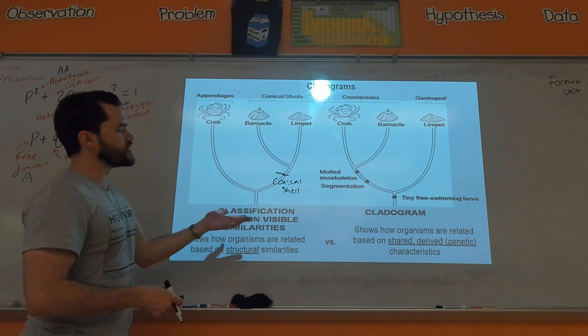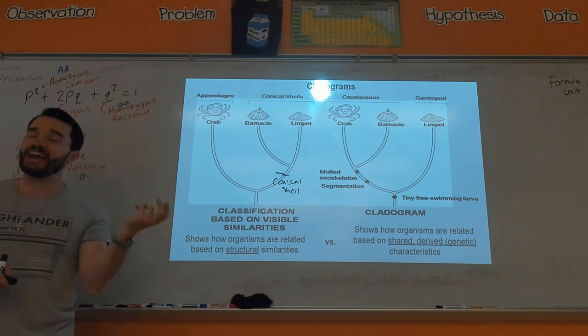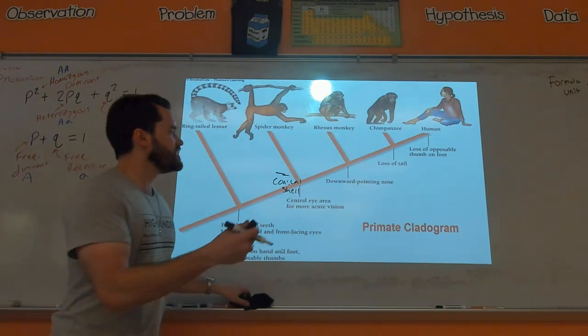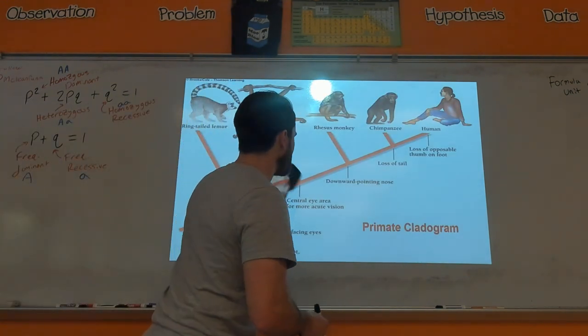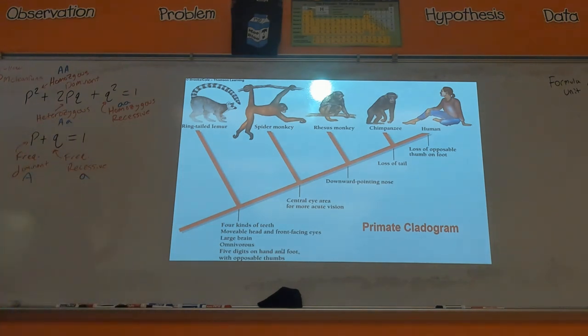They also can change like if you focus more on specifically genetic traits, that can change how the phylogenetic trees have been made. Meaning phylogenetic trees that were made in the early 1900s before DNA evidence had to be changed once we have better understanding of DNA to see how related two organisms are. Anyways, the biggest thing you need to understand for the AP exam again is how to make and how to interpret one.